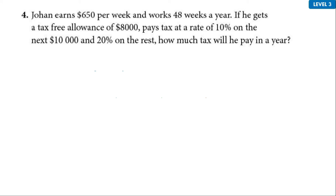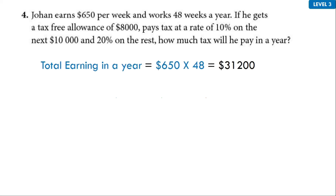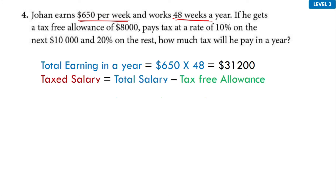Last question, Question 4. Johan earns $650 per week and works 48 weeks a year. He gets a tax-free allowance of $8,000, pays tax at a rate of 10% on the next $10,000, and 20% on the rest. Again, you don't have the annual income — it's given per week. So you calculate total earning in a year: $650 times 48. Then calculating the taxed salary — total salary minus the tax-free allowance — gives $23,200.